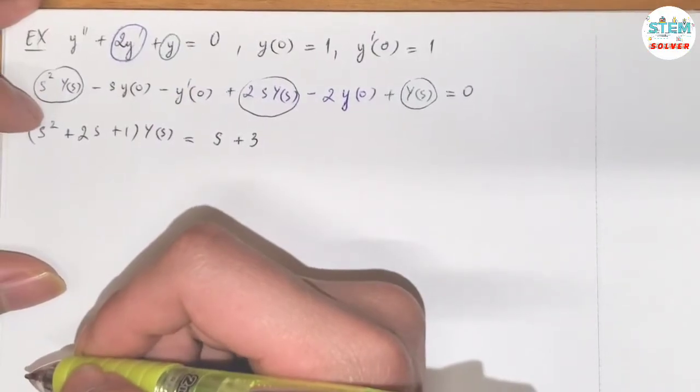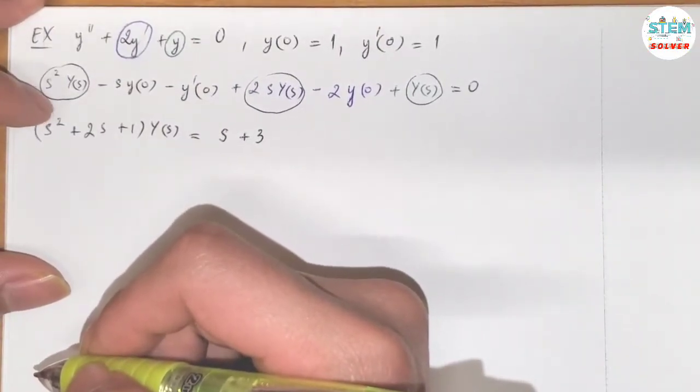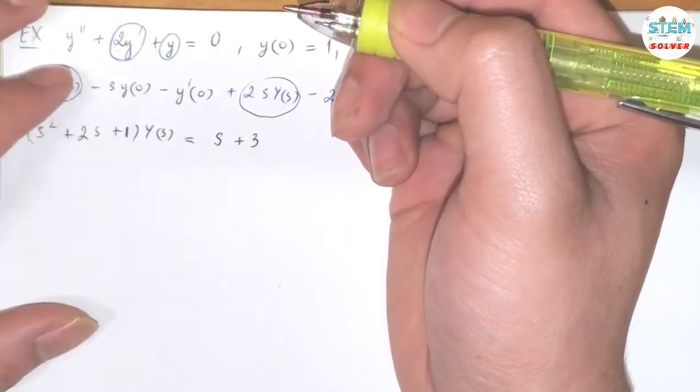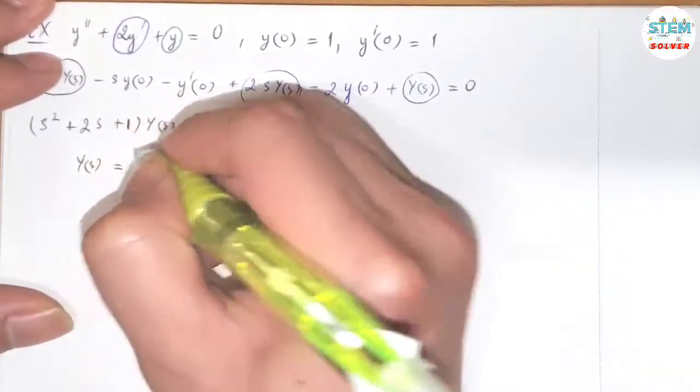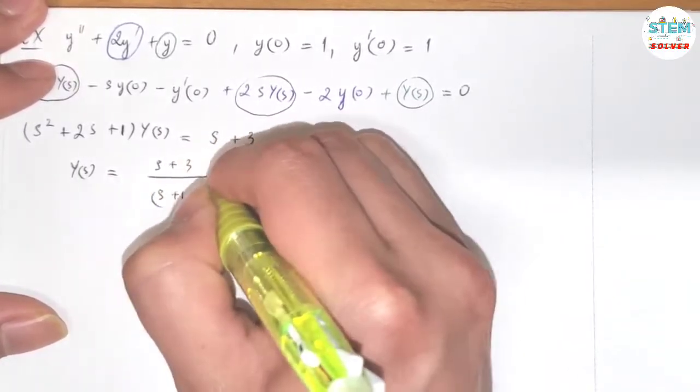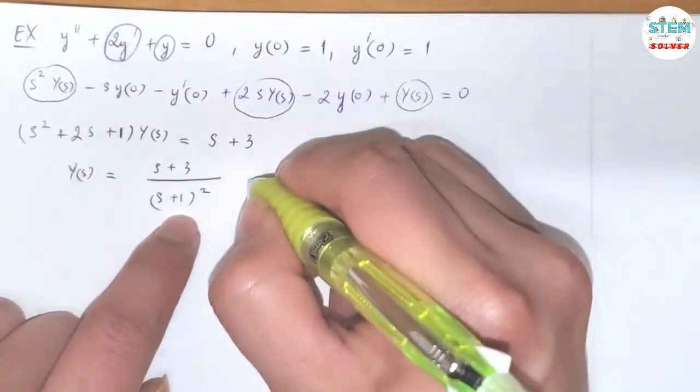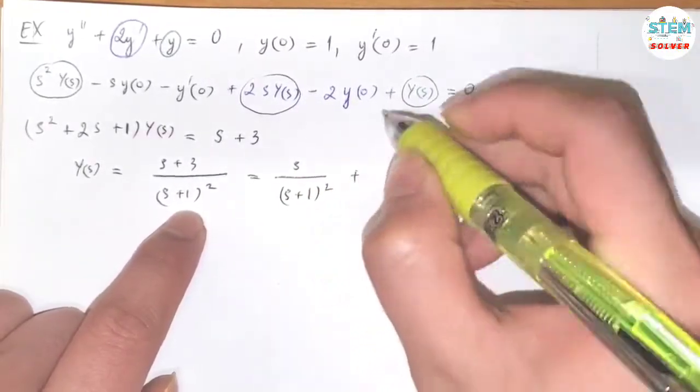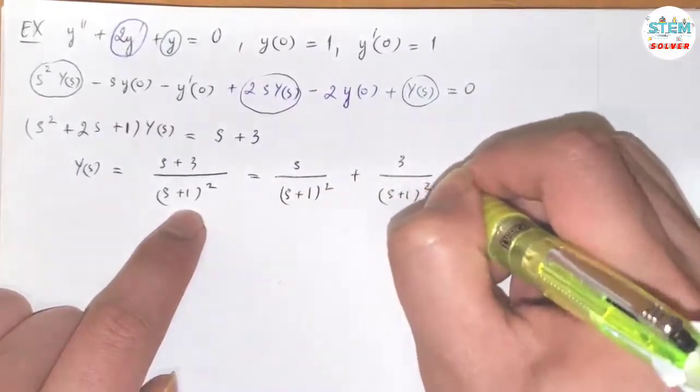Now I'm going to divide both sides by s squared plus 2s plus 1. So s squared plus 2s plus 1 is basically s plus 1 squared. So I'm going to have s plus 1 squared. So I have s over s plus 1 squared plus 3 over s plus 1 squared.